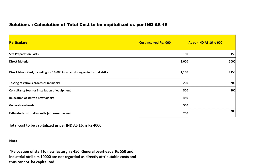Relocation of staff to the new factory: 450. General overhead: 550. However, relocation of staff to the new factory is not going to be considered because it is not directly related to the construction of the new factory. General overhead is also excluded as per Indian Accounting Standard 16, as it is not directly related to the construction of a new factory.